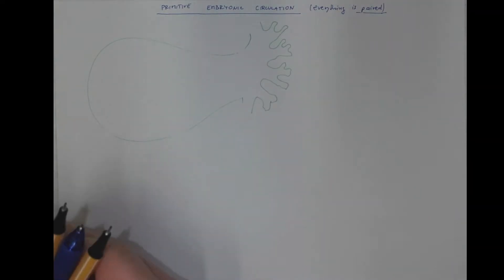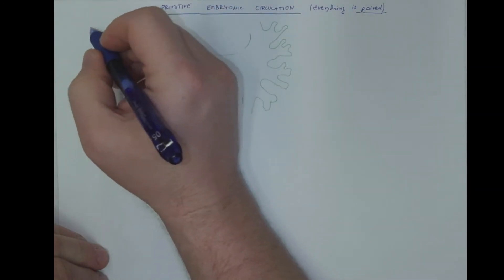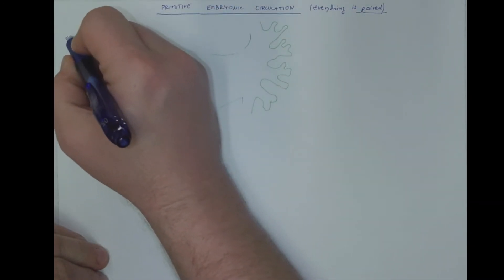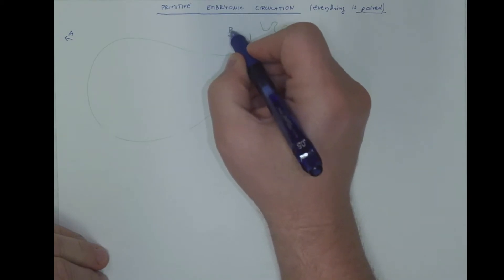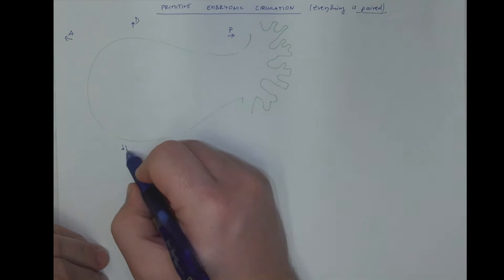And as I will not include any parts of the embryo, I need to demonstrate a direction. So this will be anterior, this will be posterior, this will be dorsal, and downwards it will be ventral.